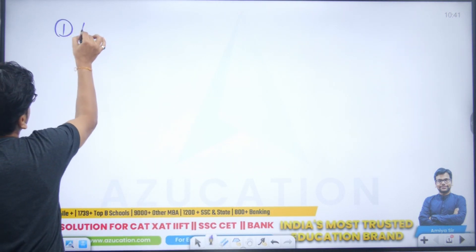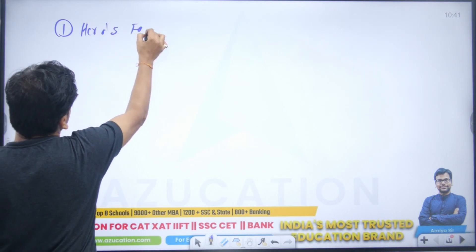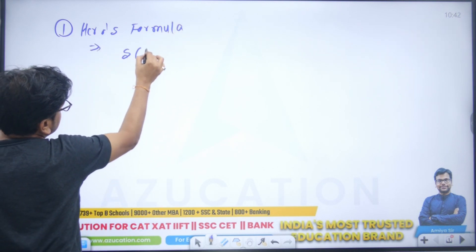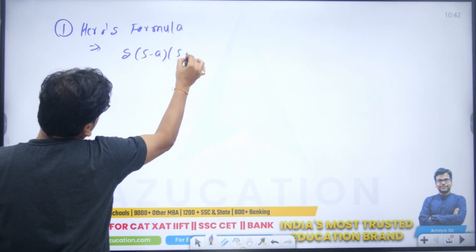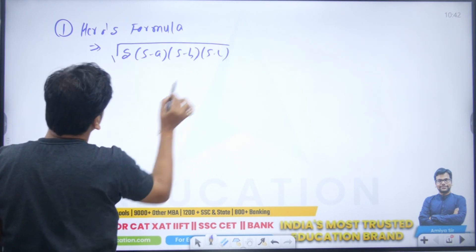Concept number one is Heron's formula. I hope if you have three sides given, you can use Heron's formula to find the area: square root of S times (S minus A) times (S minus B) times (S minus C) is the area of any triangle if the sides are given.